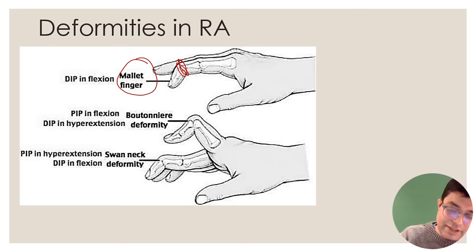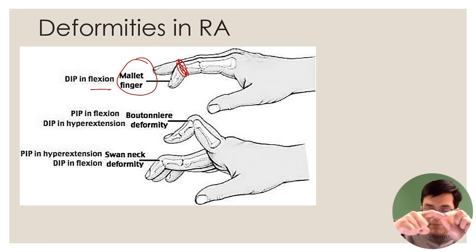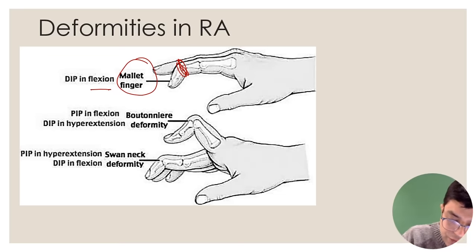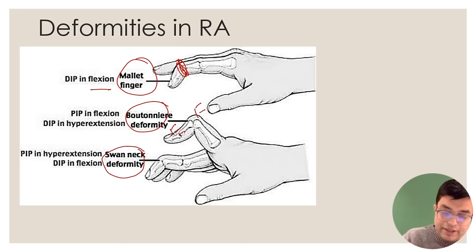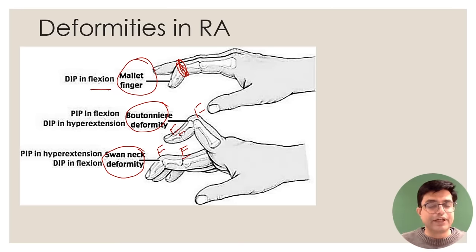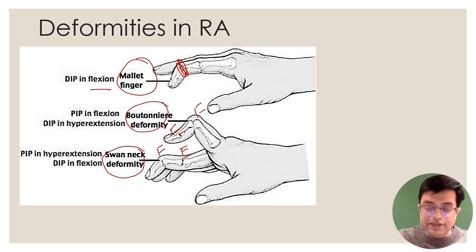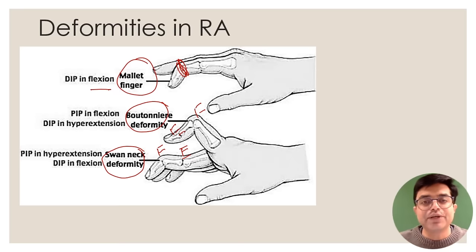Deformities in RA: Mallet finger — isolated flexion at the distal interphalangeal joint. Boutonnière deformity — flexion at the proximal interphalangeal joint and extension at the distal interphalangeal joint. Swan neck deformity — hyperextension at the PIP joint and flexion at the DIP joint (reverse of Boutonnière). Examiners can show an image or give a description and ask which deformity the patient has.